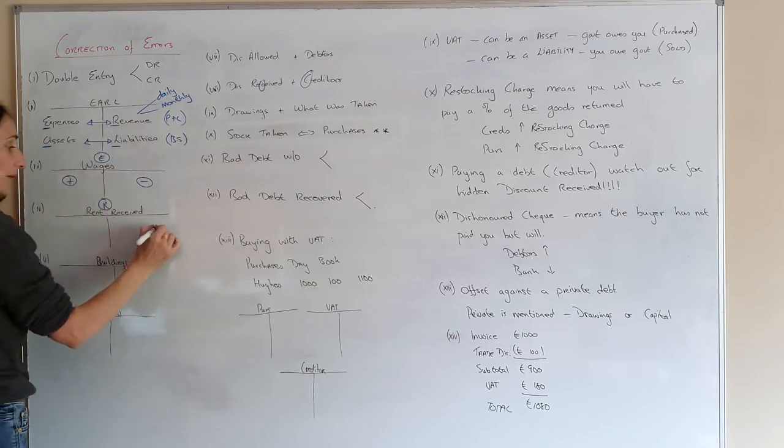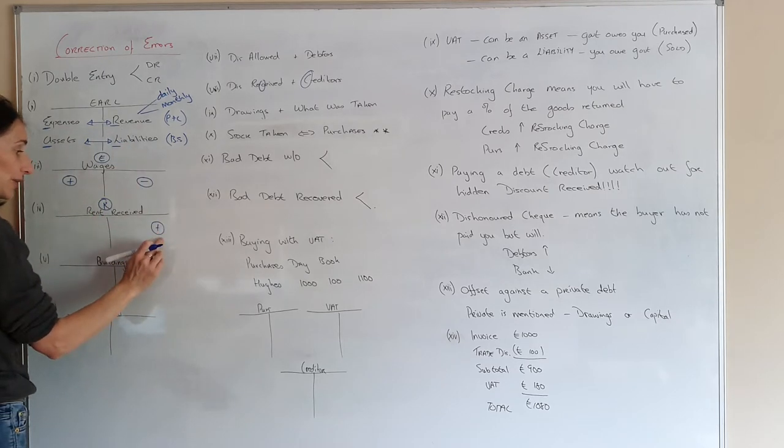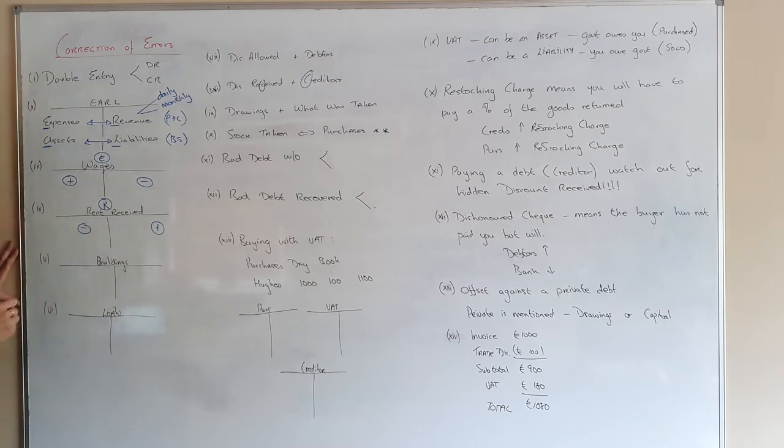And revenue should be on the credit. So it will be on this side if I want to increase it. Although in accountancy, again, it could appear on the debit. But you should know if you're reducing it if it's revenue.